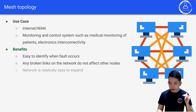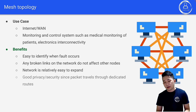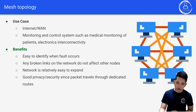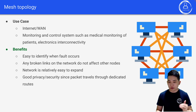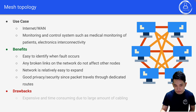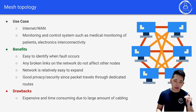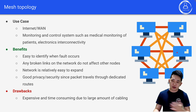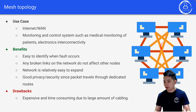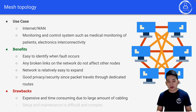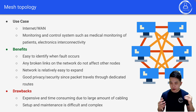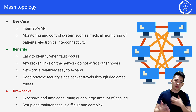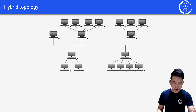The network is relatively easy to expand and offers good privacy and security since each packet travels through dedicated routes. Drawbacks include being expensive and time-consuming due to the large amount of cabling required to connect every node to every other node. Setup and maintenance are also quite difficult and complex.